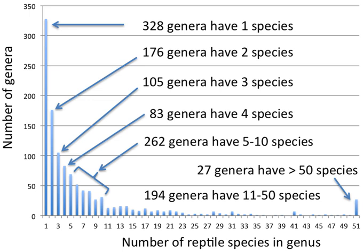First, monophyly: all descendants of an ancestral taxon are grouped together, i.e. phylogenetic analysis should clearly demonstrate both monophyly and validity as a separate lineage. Second, reasonable compactness: a genus should not be expanded needlessly.